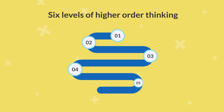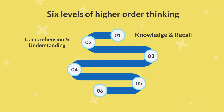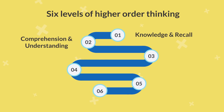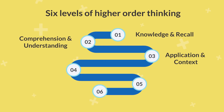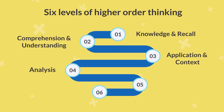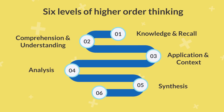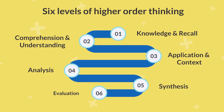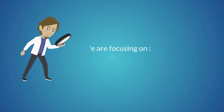In the first episode of this series, we learned that there are six levels of higher order thinking: level one, knowledge and recall; level two, comprehension and understanding; level three, application and context; level four, analysis; level five, synthesis; and level six, evaluation.